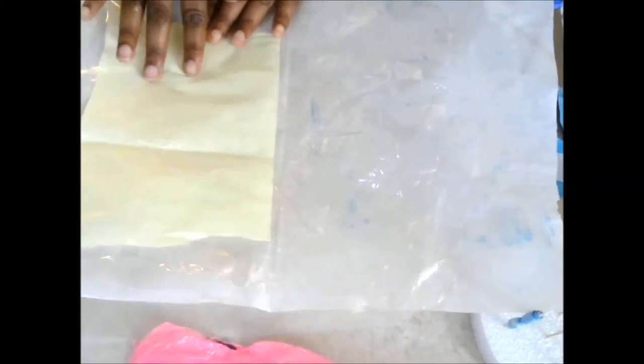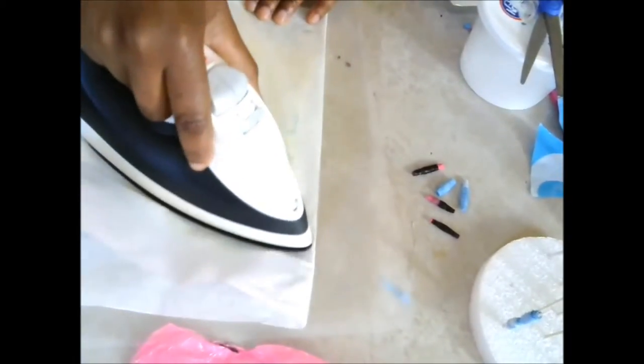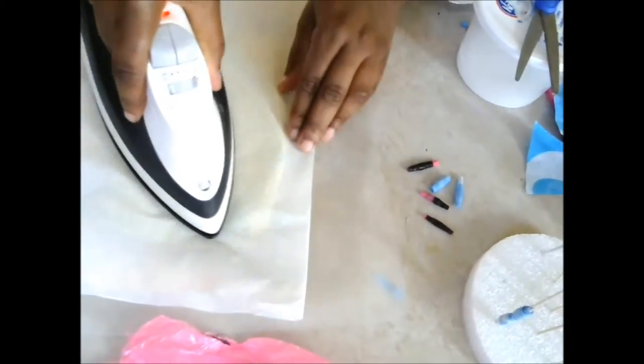A cool thing you can do is take your plastic, cut out a little piece of tissue paper, put that in the center, fold it up, and then we're just going to repeat just like we did before. You can also do that with the colored ones too.